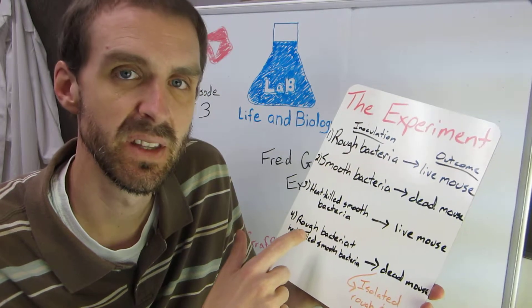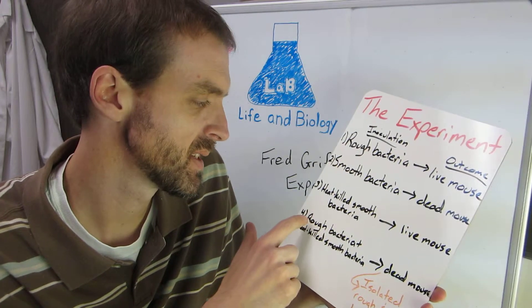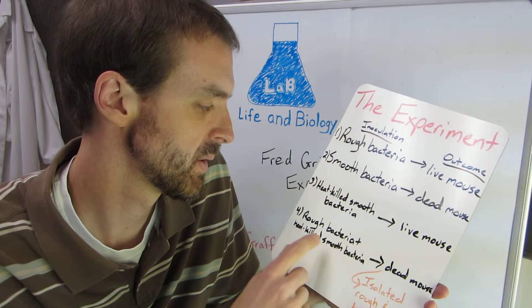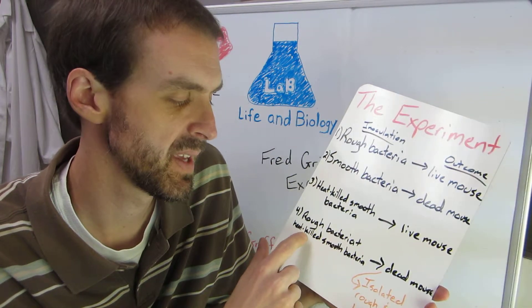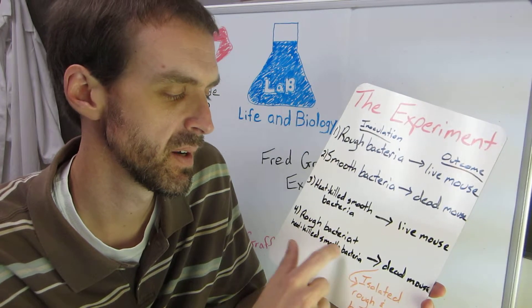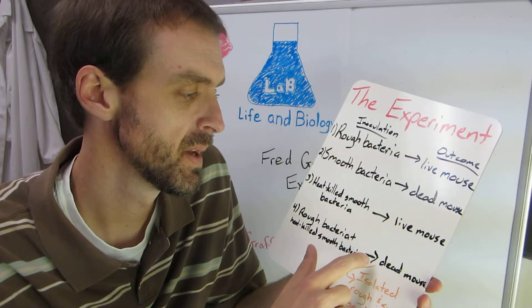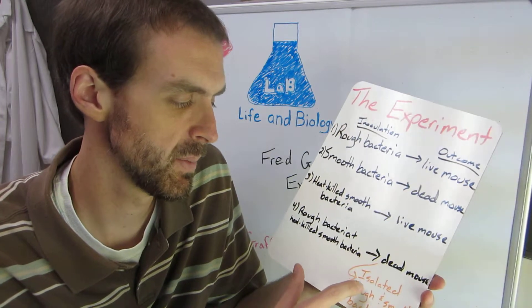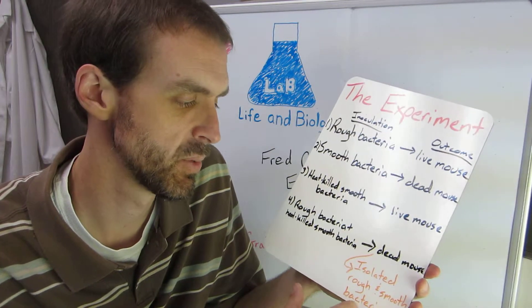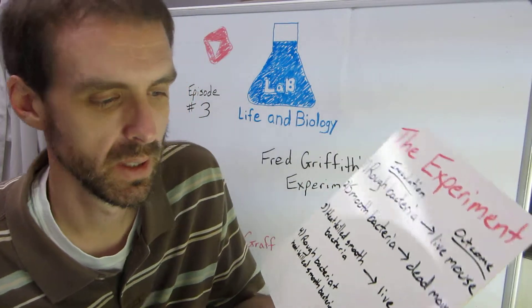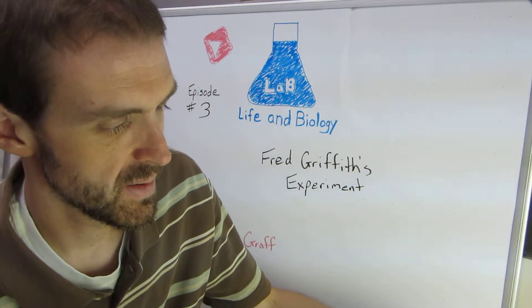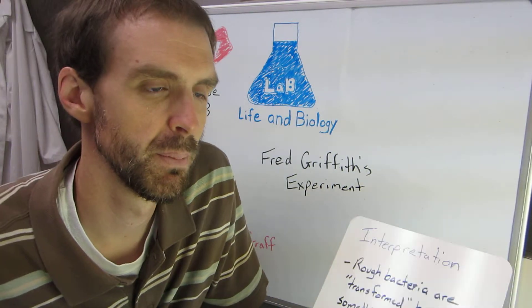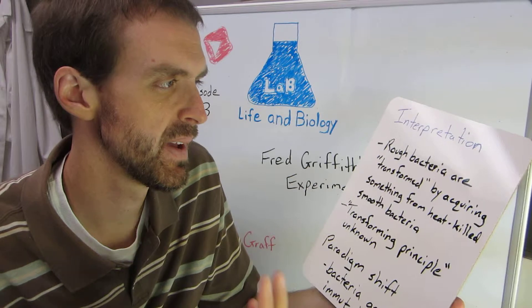The clincher for this famous experiment is that if he took rough bacteria—those that resulted in a live mouse—and mixed them with heat-killed smooth bacteria, you ended up with a dead mouse. From that mouse he was able to isolate both rough and smooth bacteria. Something's going on between the dead virulent bacteria and the live avirulent bacteria.